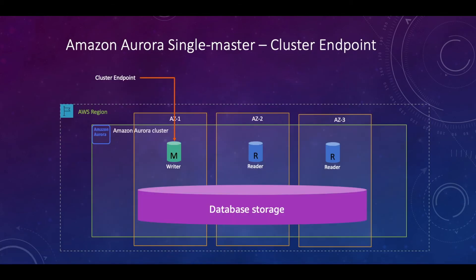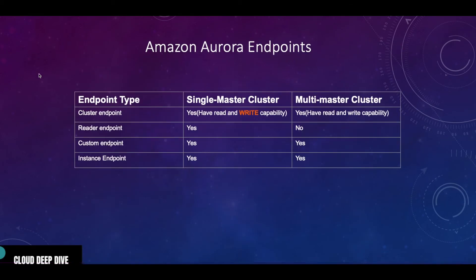The way you use instance endpoints differs between single master and multi-master: in multi-master, all operations are done using the instance endpoint, whereas in single master, all operations are done by the reader and cluster endpoints. To summarize with a comparison table: cluster endpoint exists for both cluster types — in single master mostly for write, in multi-master for both but rarely used. No reader endpoint in multi-master. Custom endpoint available for both. Instance endpoint available for both, but used heavily in multi-master.